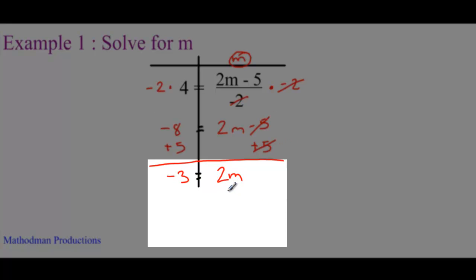And from this point, it's now just a one-step equation. Divide both sides by 2. Negative 3 divided by 2 is just negative 1.5 equals, the 2's cancel out, m.